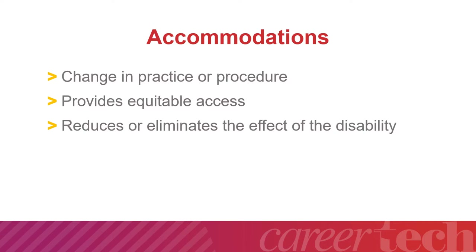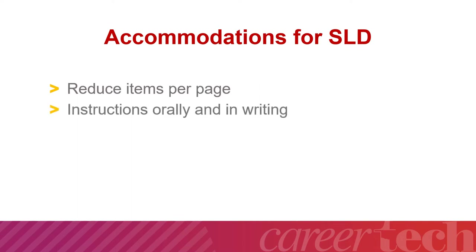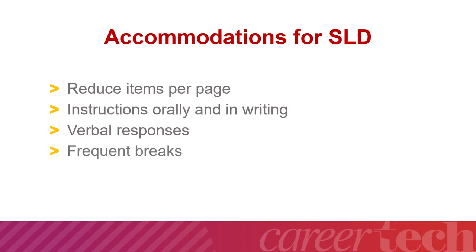However, if the student continues to struggle after trying the accommodations, you should request another meeting to discuss the challenges and develop new accommodations. Even though accommodations should be determined individually based on the student's needs, some common accommodations that teams frequently consider when a student has a specific learning disability include reducing the items per page, which can prevent a student from feeling overwhelmed. Providing instructions orally and in writing increases the opportunity for the student to process the information correctly. Allowing verbal responses can help students who have difficulty expressing themselves in writing. Frequent breaks prevent a student from becoming frustrated or fatigued when they process slowly. Extended time can help when they have difficulty completing assignments at the same rate as their peers.